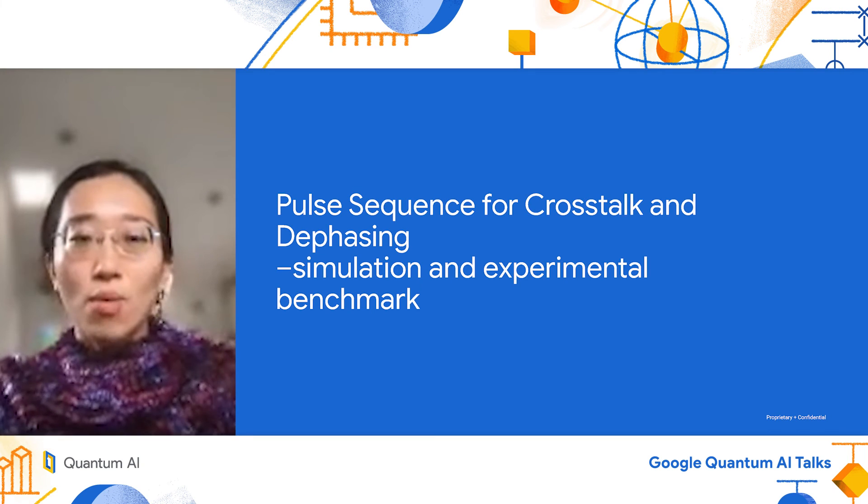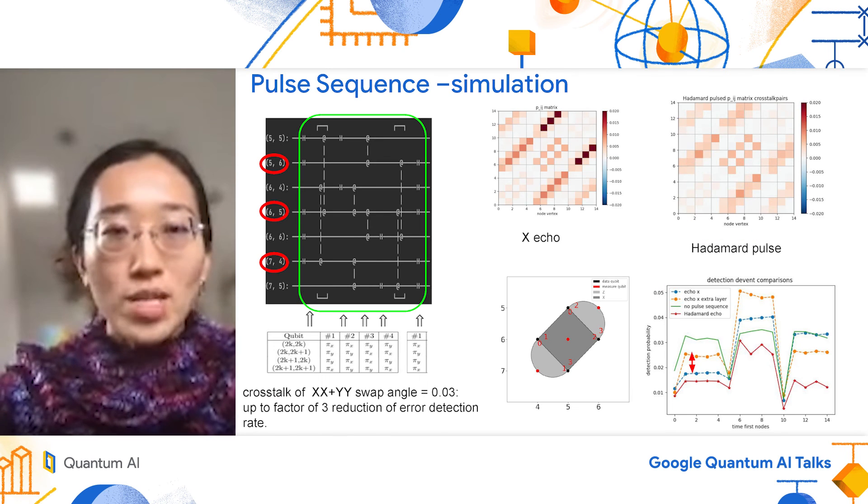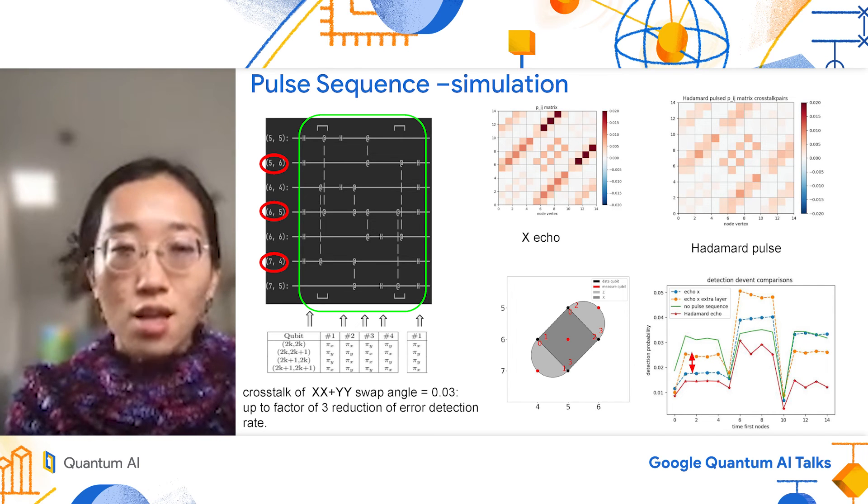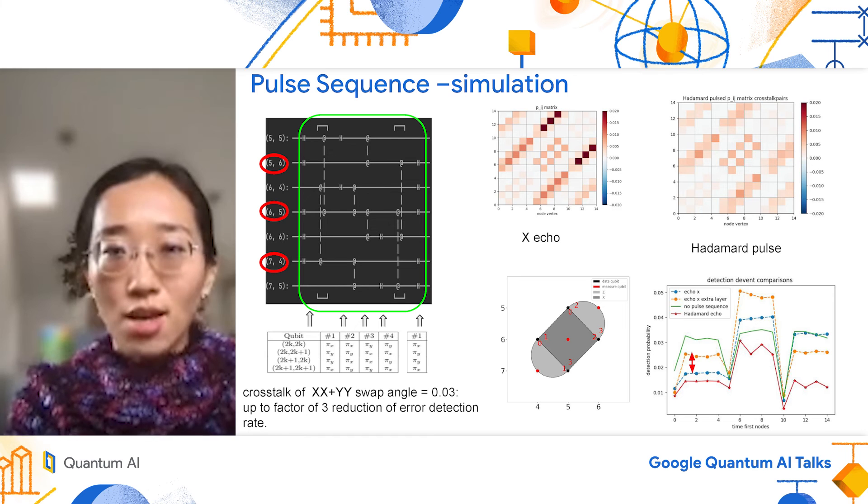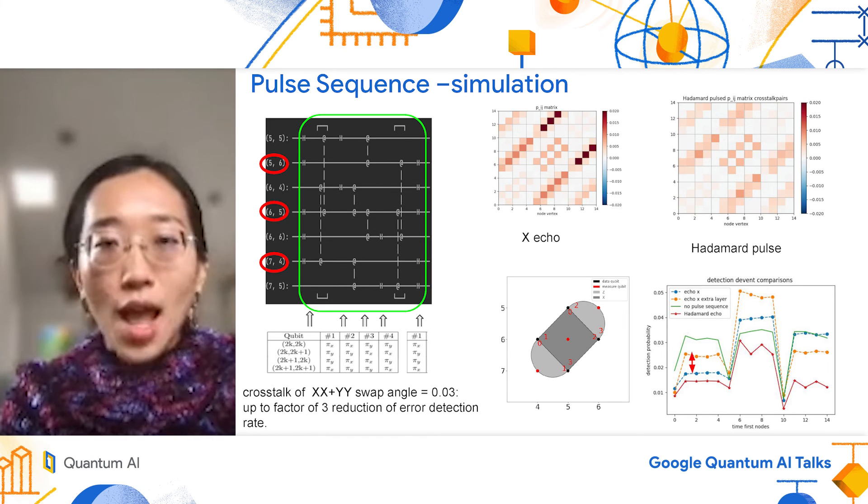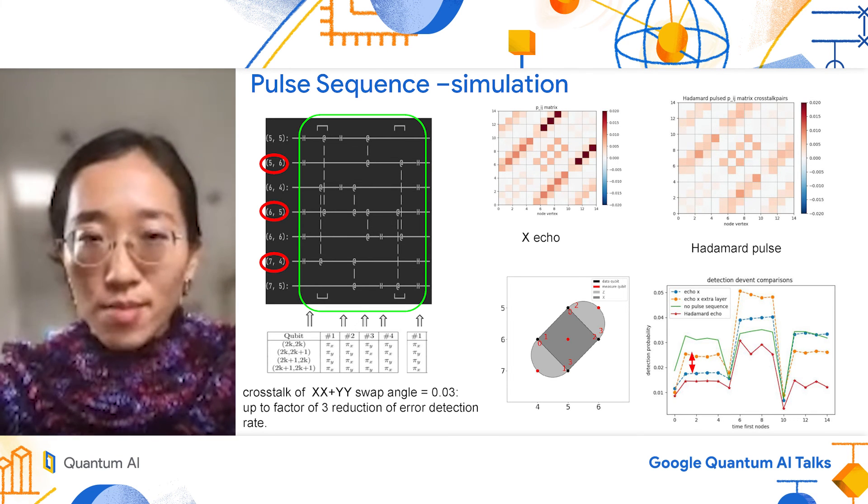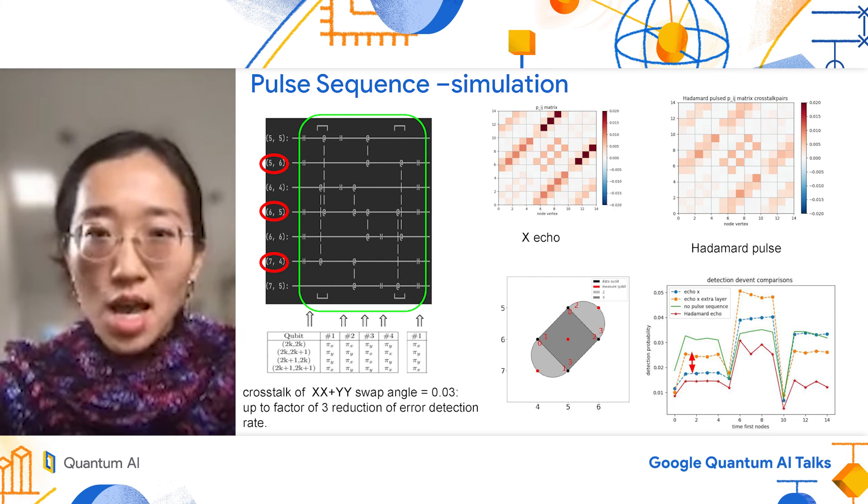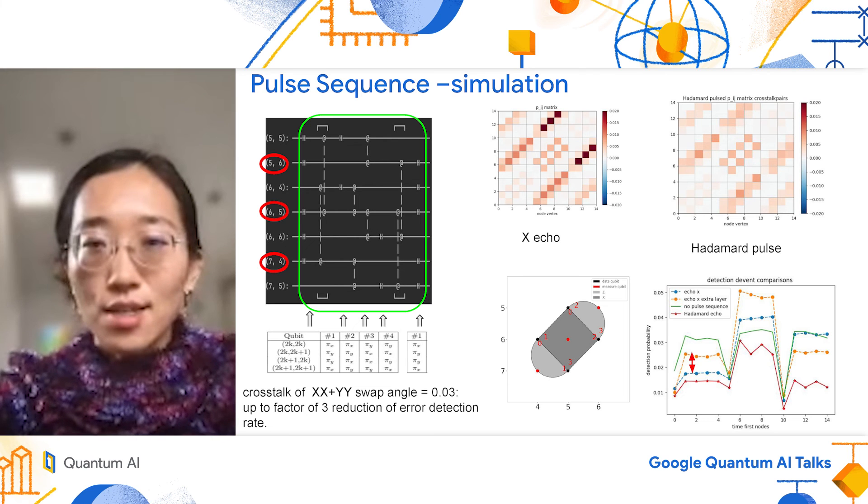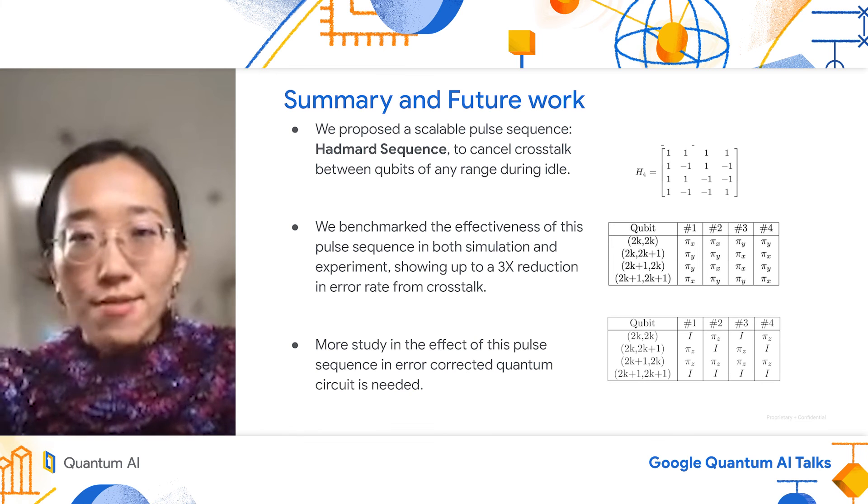Now I will quickly go over some preliminary simulation and experimental results. We simulated the effect of our Hadamard pulse sequence in a distance three surface code circuit and compared it with more conventional simple X-echo where we apply X-gate on idle qubits, and also compared it against a no pulse sequence circuit using our noisy simulator. We see a factor of up to three reduction in the detection rate in the distance three surface code.